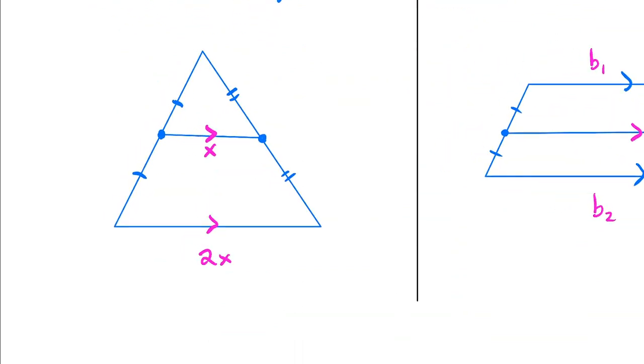So here we go, in picture form. If we connect the two midpoints in a triangle, we get that it is automatically parallel to the base. And whatever length this is, you have half the length right here.